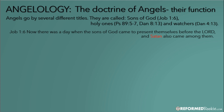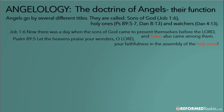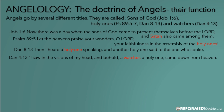Angels go by several different titles. They are called sons of God — in Job 1:6, 'the sons of God came to present themselves before the Lord, and Satan came among them.' Satan means adversary. Psalm 89 references 'the assembly of the holy ones' — the good angels who haven't fallen are called holy ones, meaning set apart or other. Daniel 8:13 mentions 'a holy one speaking.' Daniel 4:13 says, 'A watcher, a holy one, came down from heaven.' So they are called sons of God, holy ones, and watchers.